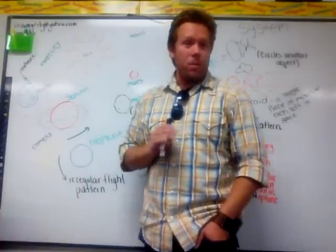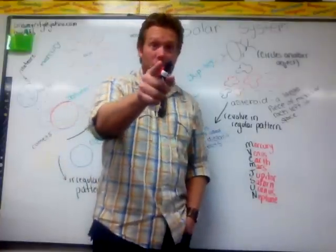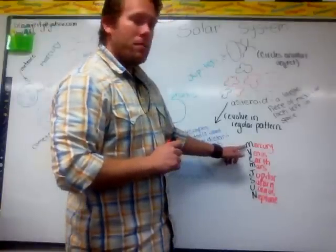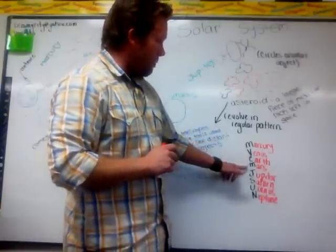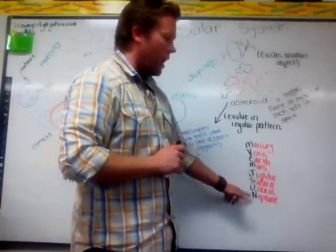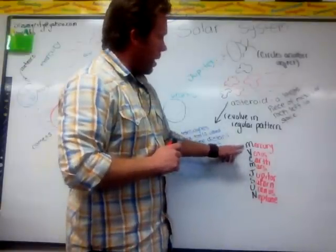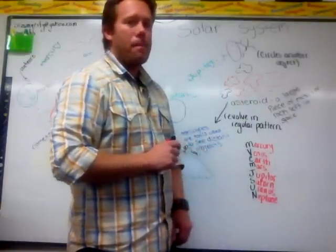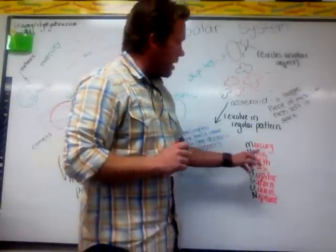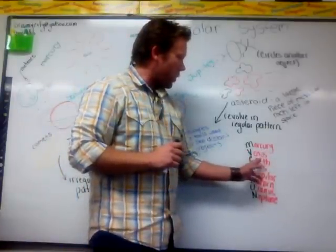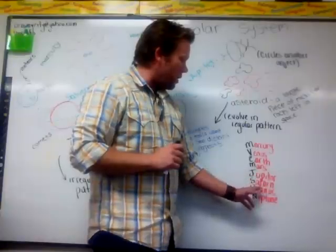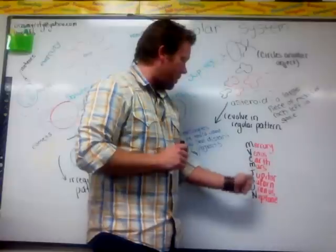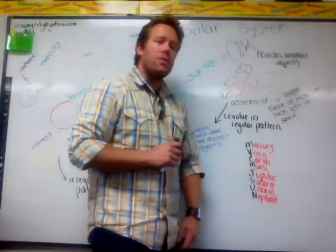We came up with a little story in our class to help us remember: 'Mom's veggies enter my jiggly stomach until nighttime.' These are the planets — Mercury, Venus, Earth, Mars, Jupiter, Saturn, Uranus, and Neptune. Mercury is the closest one to the sun, and Neptune is the one that is farthest away.